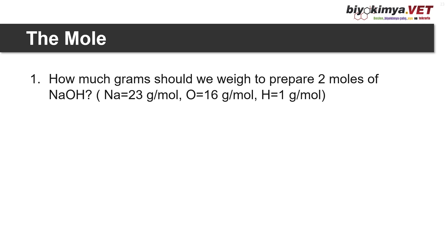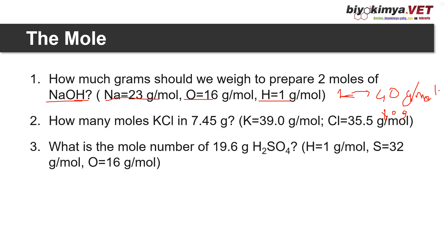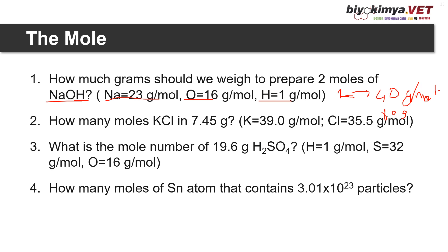Let's study some problems. The first problem: how many grams should we weigh to prepare 2 moles of sodium hydroxide? Since it is a molecule, we calculate the molecular mass as the sum of the atomic masses of sodium, oxygen, and hydrogen, which equals 40 g/mol. So for 1 mole of sodium hydroxide we need 40 g, and for 2 moles the answer is 80 g. For the remaining questions, please pause the video, try to solve them, and put your results in the comments.